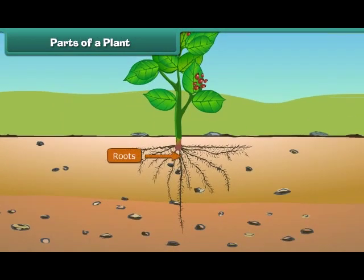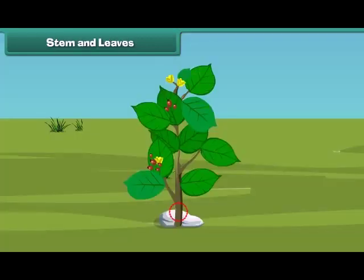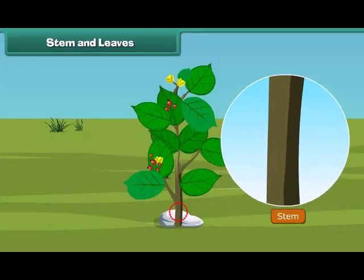Roots are the lower part of a plant. They grow in soil and help the plants to get water and minerals from the soil. The next part of the plant is a stem. A stem is the hard part of the plant which grows above the ground. It bears leaves, fruits and flowers, and also supports the plant.